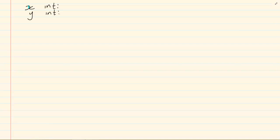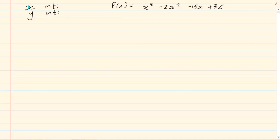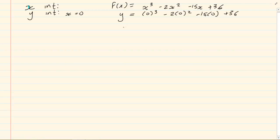What would the next step be? The next step would be what you had always been doing since the beginning of graphs: x intercept and y intercept. Let us take the same equation. If we have f of x is equal to x cubed minus 2x squared minus 15x plus 36, the y intercept means x is equal to 0. So y equals 0 cubed minus 2 times 0 squared minus 15 times 0 plus 36, which means y is equal to 36. So the coordinate is 0 and 36.